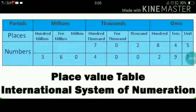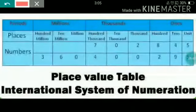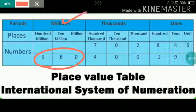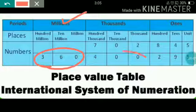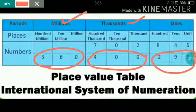Another example: 360 is the part of millions, so we write 360 millions, 400,000, and 295.